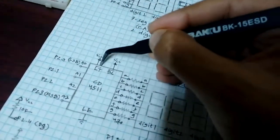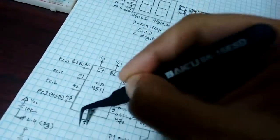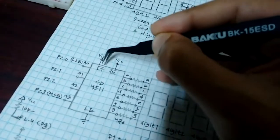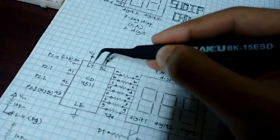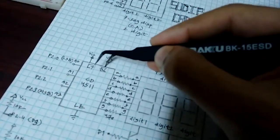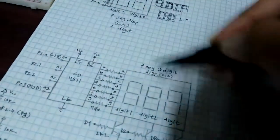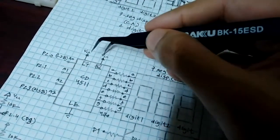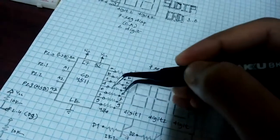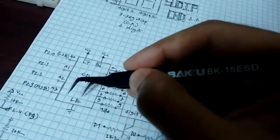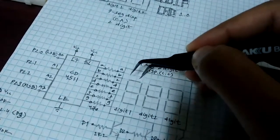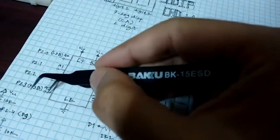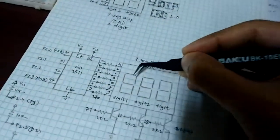The 4511 has these control pins. This is a lamp test, which is active low, so when this is low all the segments are lit up. We don't want that so we've tied it to VCC. This is the blank pin, so when it's low it blanks out the display, so we don't want that either so we tied it to VCC. And this is the latch enable pin which is active high. If we put high there it will store the current displaying value and keep it there, and no matter what the input is it's gonna store that value.